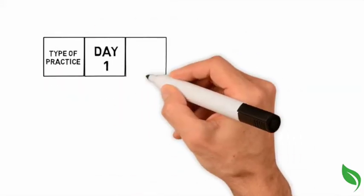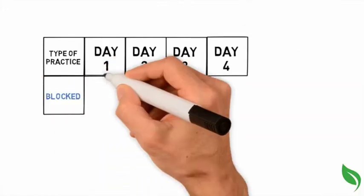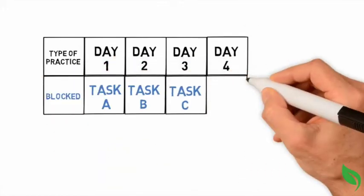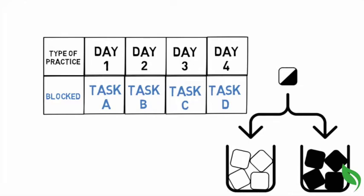An example of blocked practice would be doing four practice activities on formatting dates, then four activities on sorting data, then four activities on alternating views in Microsoft Excel.